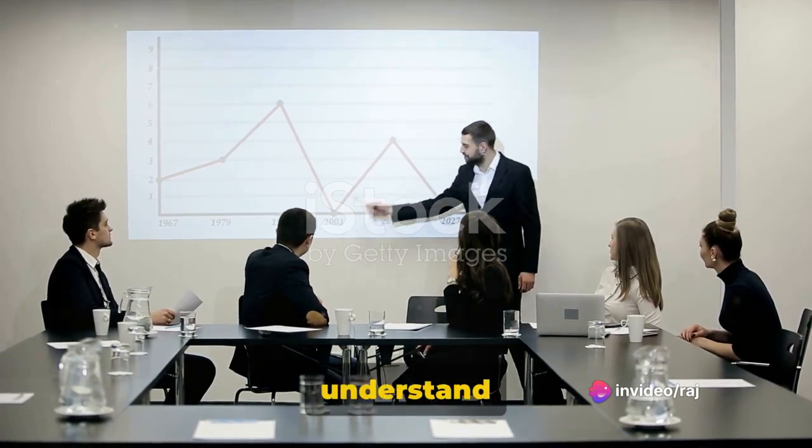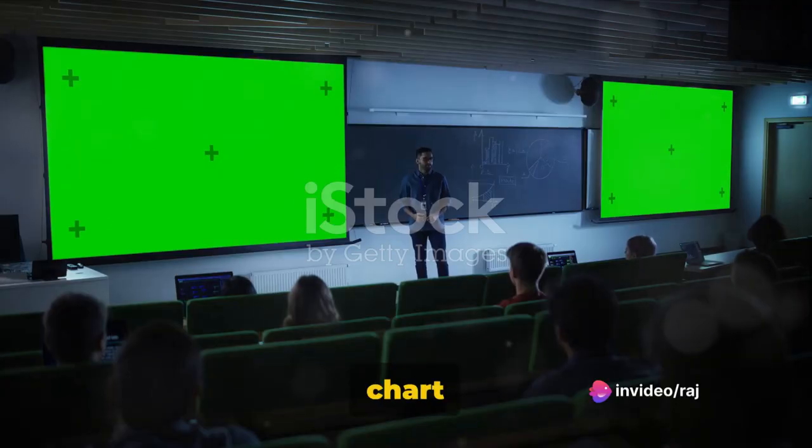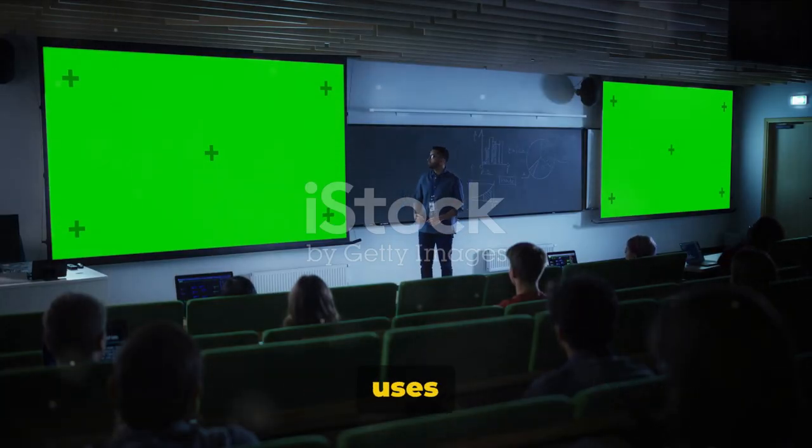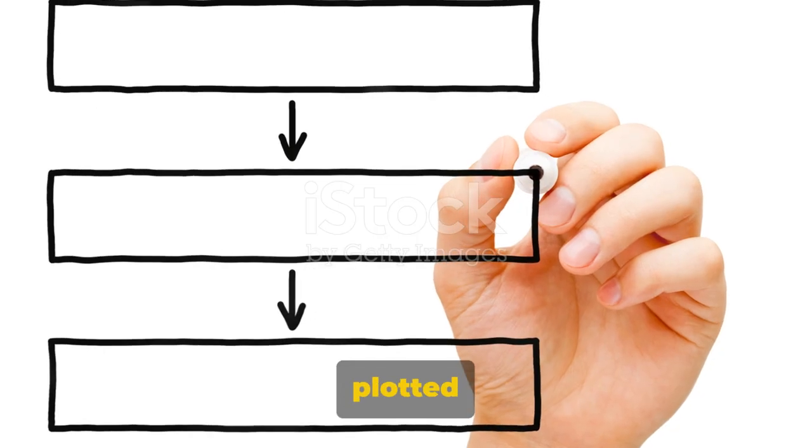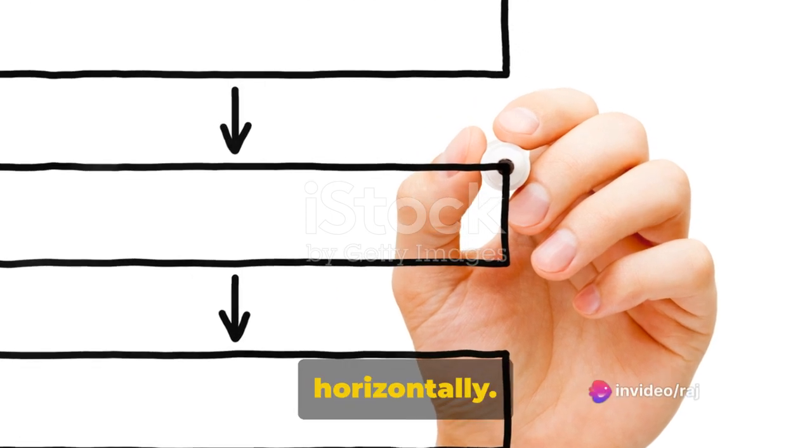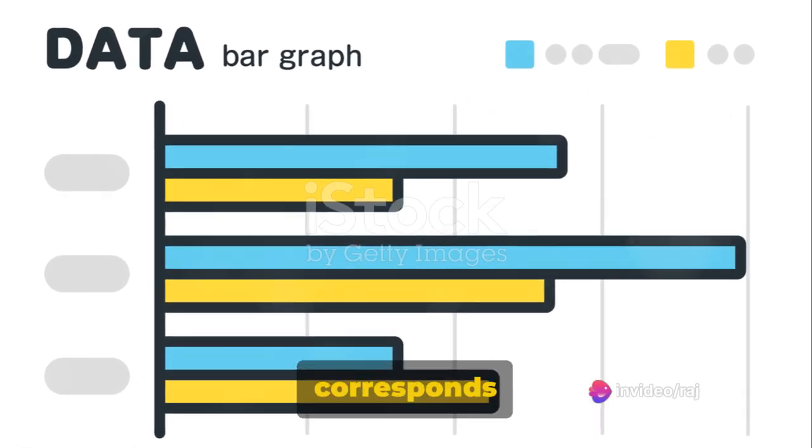First and foremost, you need to understand the bar chart. This chart is a graphical display of data that uses rectangular bars of varying lengths to represent information. These bars can be plotted either vertically or horizontally. The length or height of the bars corresponds to the quantity of the data they represent.